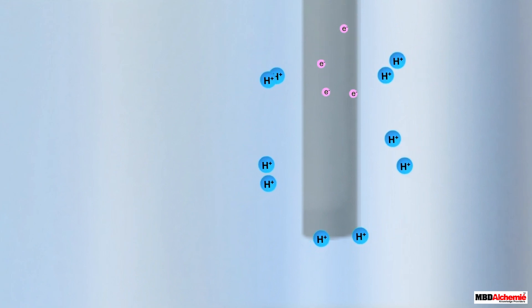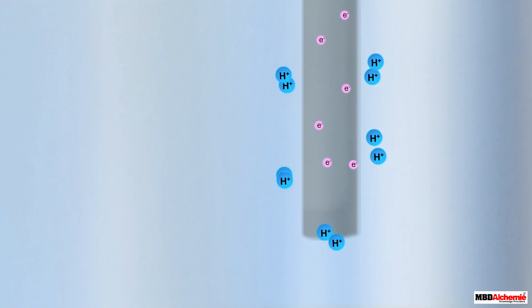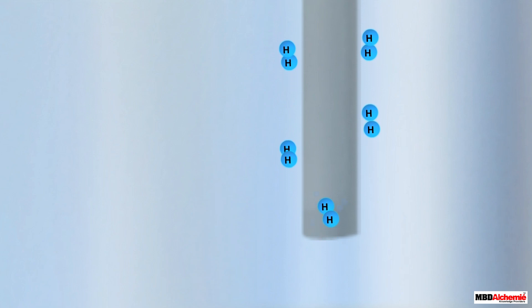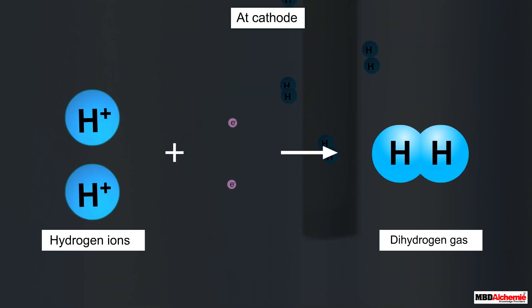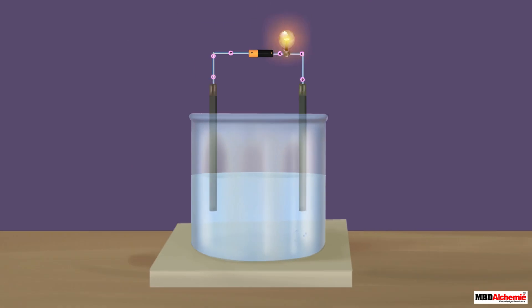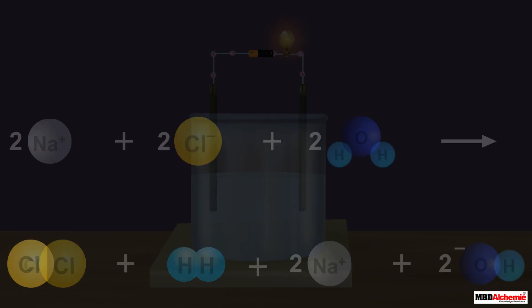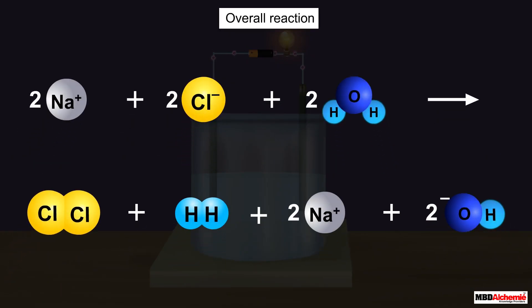At the same time, the hydrogen ions move towards the cathode and get reduced to form dihydrogen. Therefore dihydrogen gas is released at the cathode. The chemical reaction at the cathode is represented as shown, and the overall reaction for the process can be written as shown.